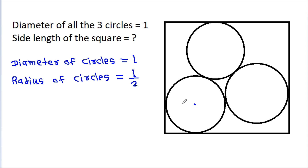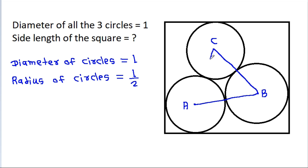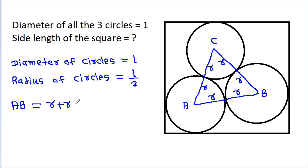Suppose A, B, and C are the centers of the circles. If we join AB, BC, and CA, then each of these segments equals radius plus radius. So AB will be R + R = 2R = 2 × (1/2) = 1.